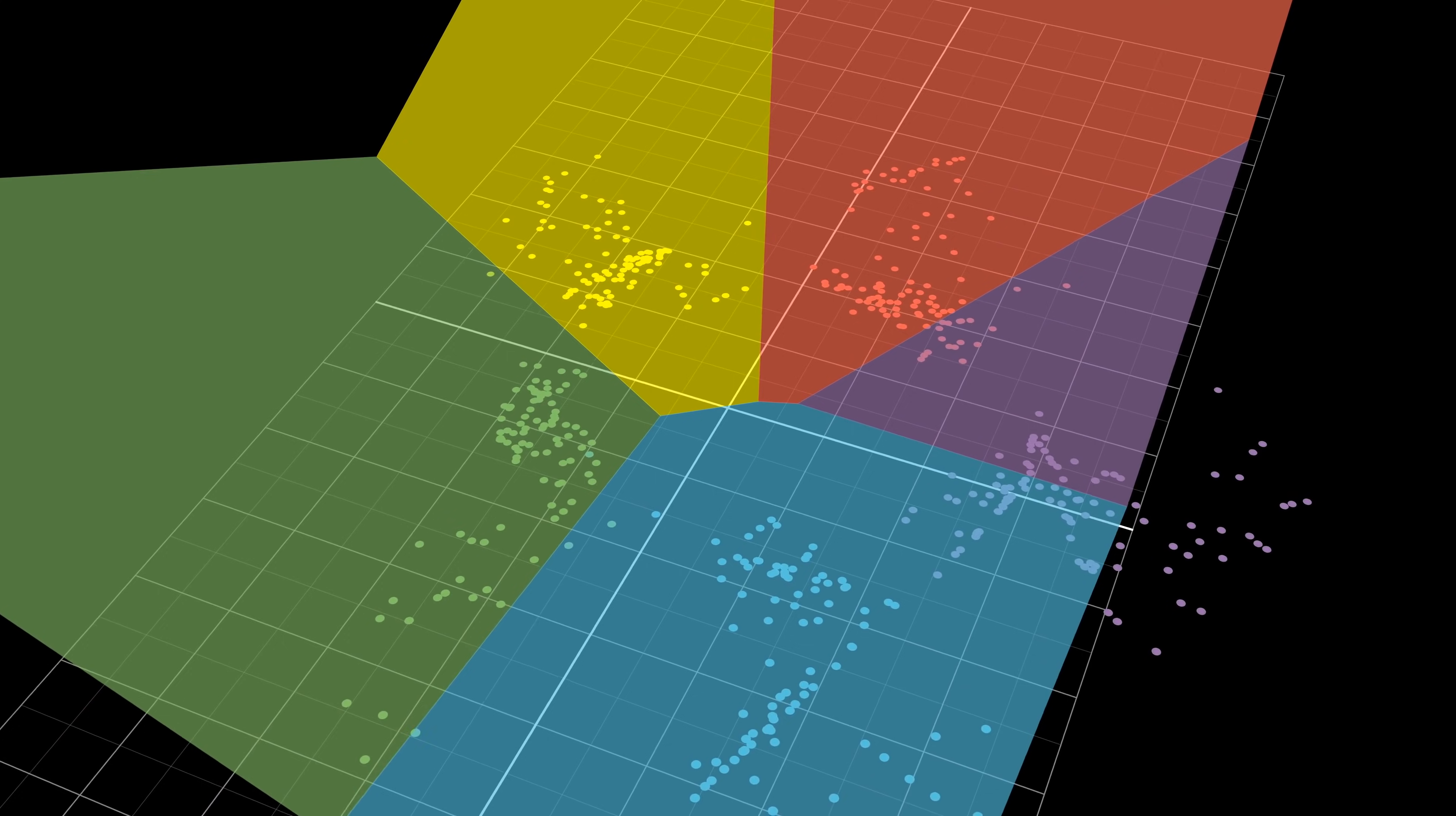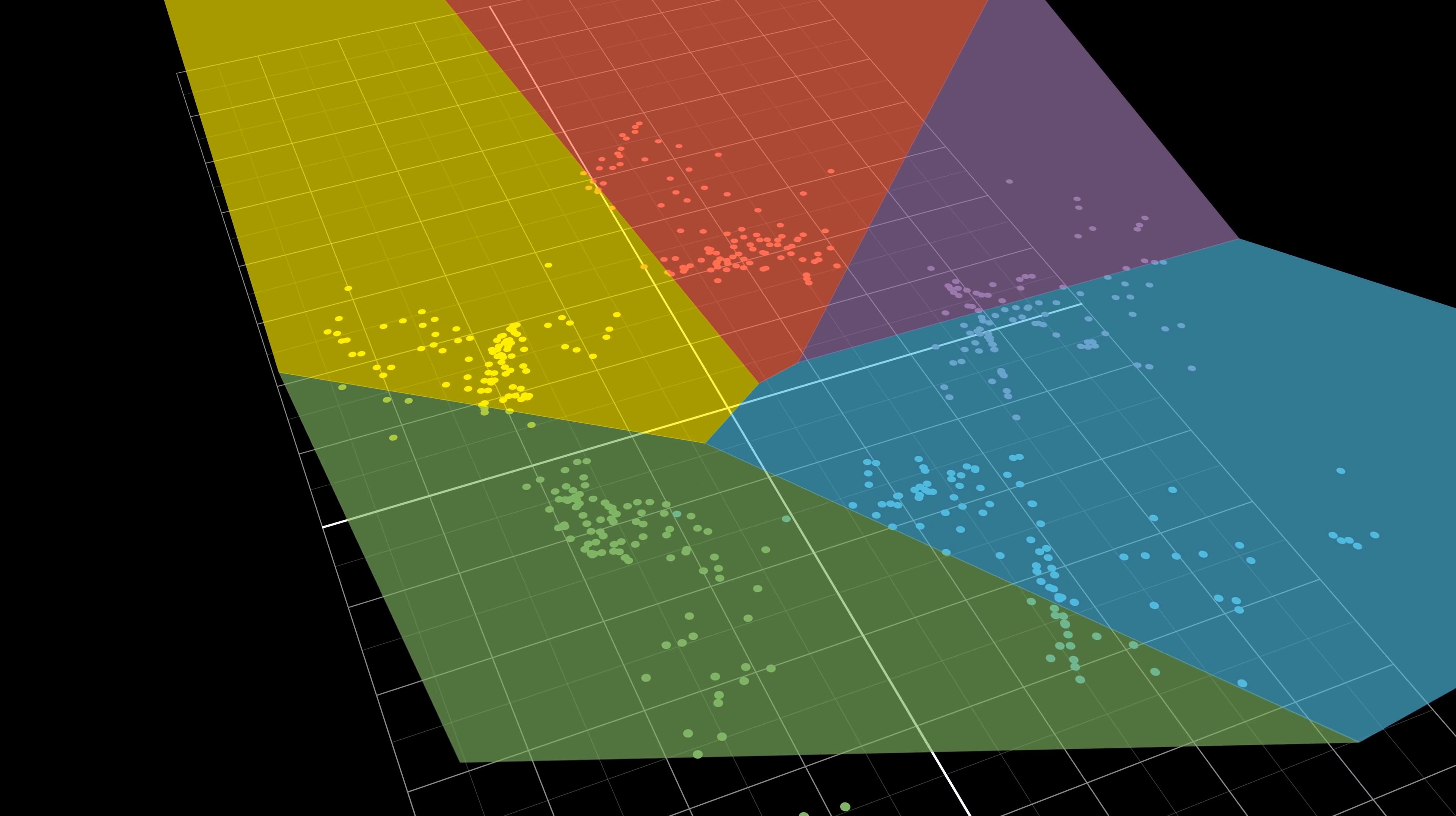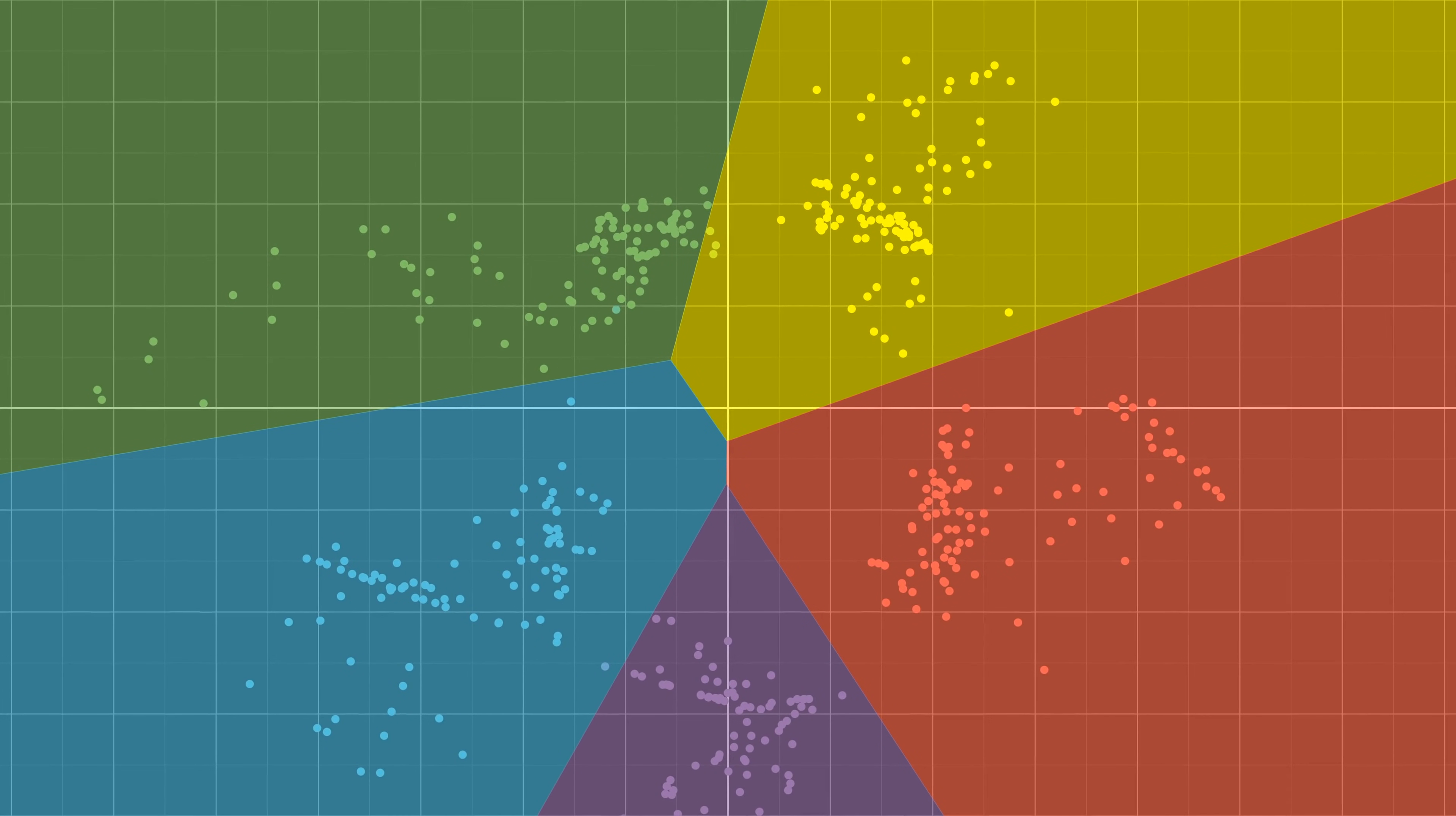This is our final plane. Each point in the plane represents the maximum value the neural network outputted out of the five neurons, along with the corresponding color that had its maximum value. So if I were to show you the plane from the top, it's just our decision boundaries from the previous animation.